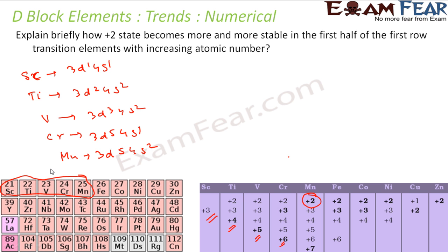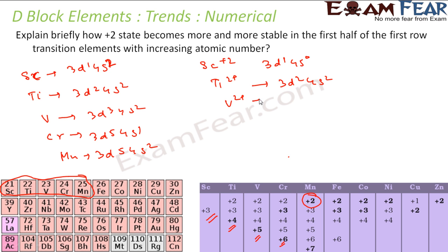If you remove two electrons to get the +2 state: Sc²⁺ is 3d¹ 4s⁰, Ti²⁺ is 3d² 4s⁰, V²⁺ is 3d³ 4s⁰, Cr²⁺ is 3d⁴ 4s⁰, and Mn²⁺ is 3d⁵ 4s⁰. None of the earlier ones have a stable configuration, but Mn²⁺ with 3d⁵ is the stable half-filled configuration — so only Mn²⁺ is stable among these +2 states.